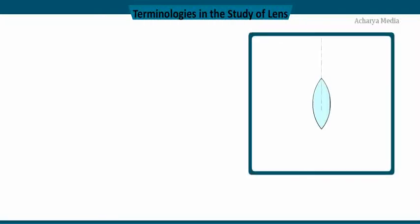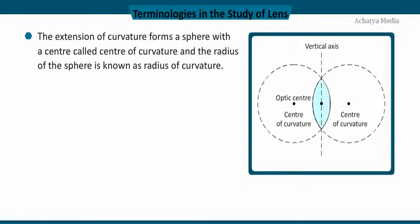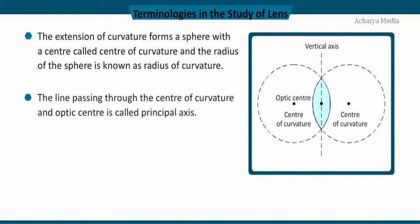Now let us learn the important terminology used in the study of lenses. The central plane of the lens is known as the vertical axis. The optic center is the center point of the lens through which the emergent ray appears undeviated after refraction through the lens. The extension of curvature forms a sphere with a center called the center of curvature, and the radius of the sphere is known as the radius of curvature. The straight line passing through the center of curvature and optic center is called the principal axis.